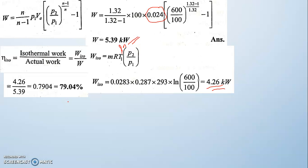For thermal machines like heat engines, actual work is less than ideal work. But for compressors it is the opposite — actual work is greater than isothermal work. This is because the compressor must do more work to achieve the same pressure ratio in practice due to friction and irreversibilities. In work-input machines like compressors, actual work input is always greater than ideal (minimum) work.